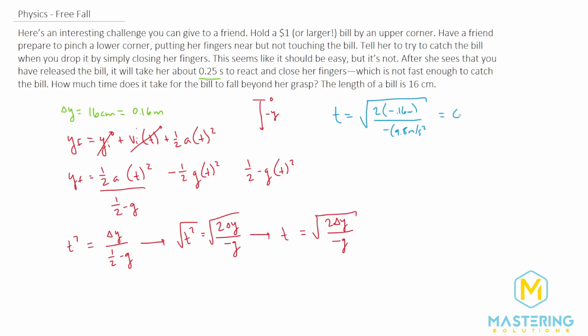So 0.18 seconds is the total time it takes to drop beyond her grasp. But she has a reaction time of a quarter of a second, so it's falling too fast, slips through her fingers before she can react and squeeze them to catch it.